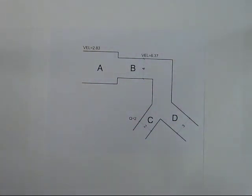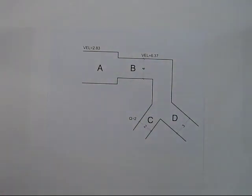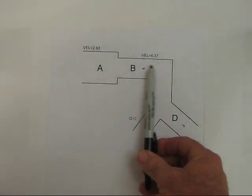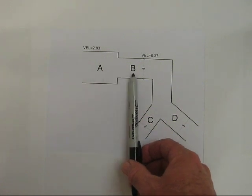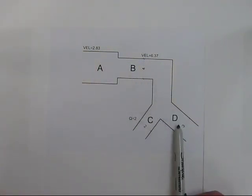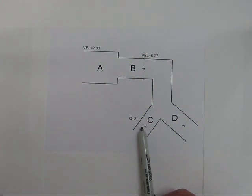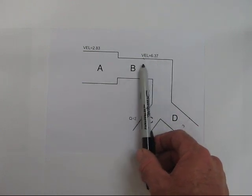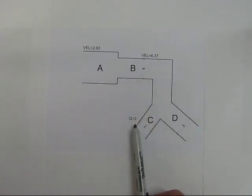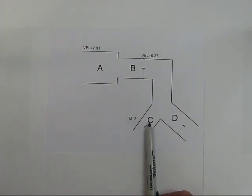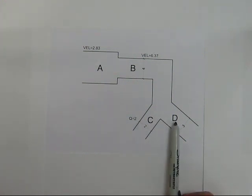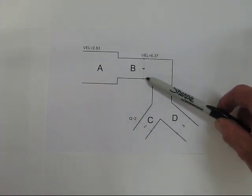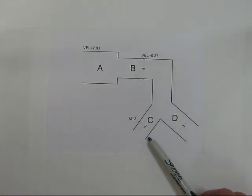Given a pipe system shown in the diagram, we've got some missing information. We've got four pipes: A runs into B, and B runs into C and D. We have the velocity of flow at A, the velocity at B, the flow rate at C, but we don't have the flow rate at D. We're also given the diameter at B and the diameter at C and D.